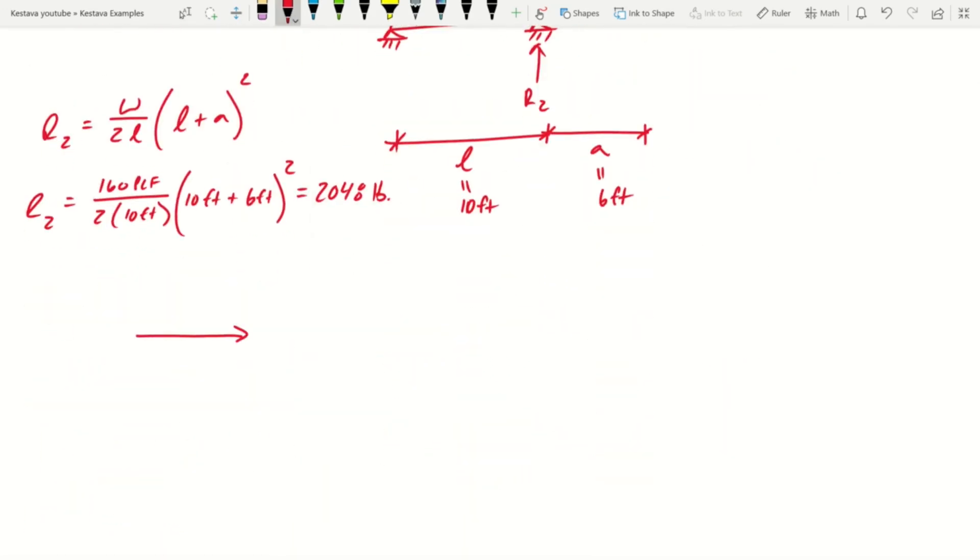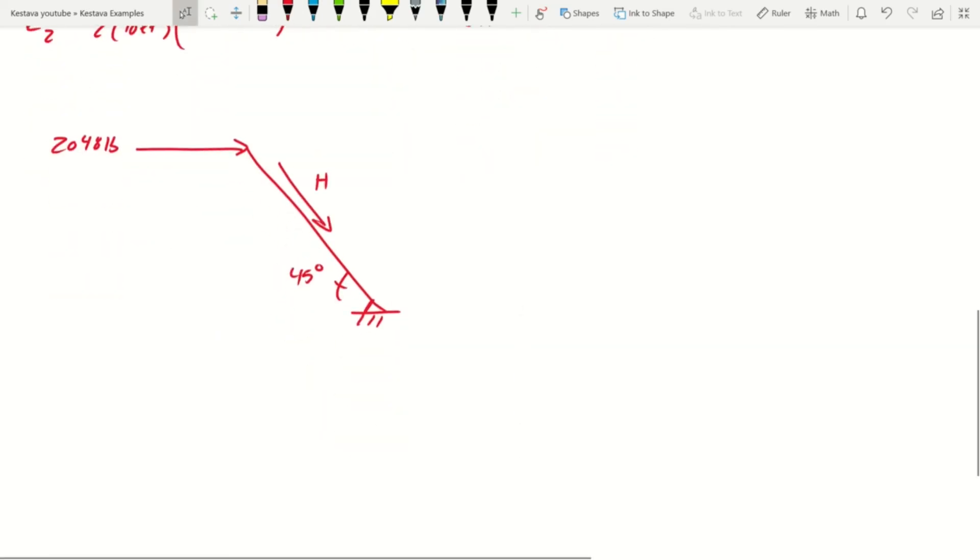So don't jump the gun. So based on our geometry, we have 2,048 pounds acting horizontally, but then we have our brace acting at a 45 degree angle. Let's make that pin connection. So we need to know now what's the axial force based on that angle.